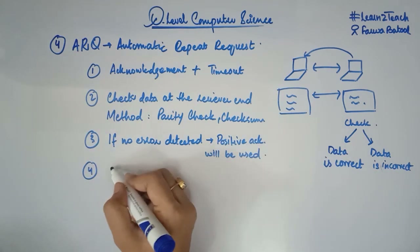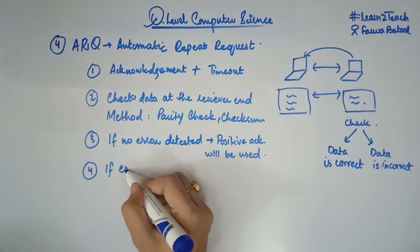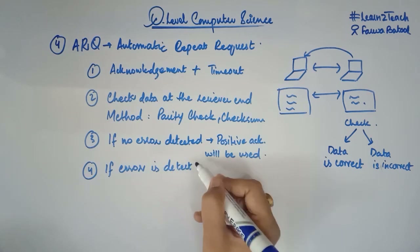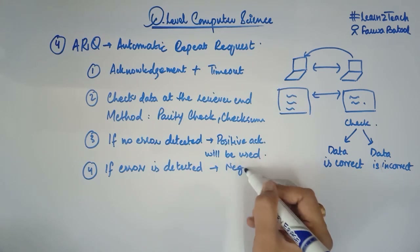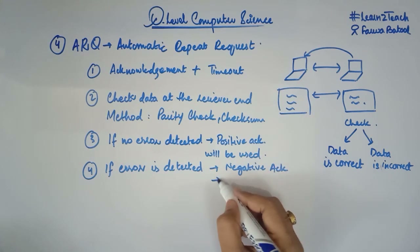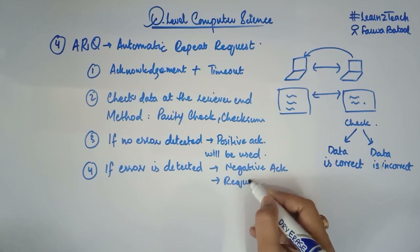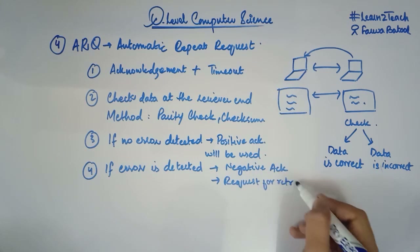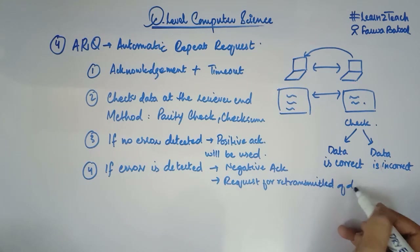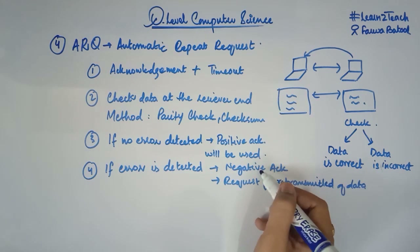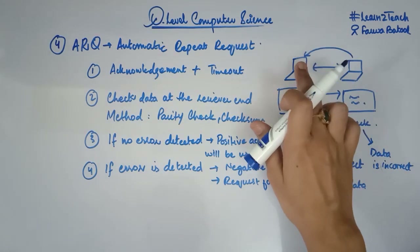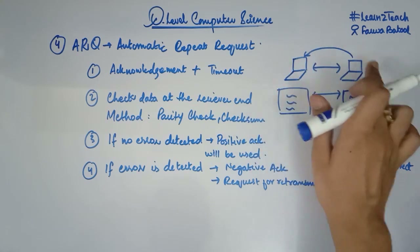But if an error is detected, then we are going to use a negative acknowledgement. Negative acknowledgement means that you are going to request the sender for retransmission of data. So if the error is detected — meaning you have incorrect data — you send a negative acknowledgement and the sender needs to send the data again.